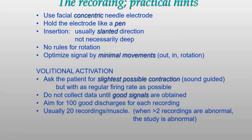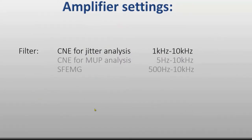Usually we record from 20 different positions in the muscle, which includes about two skin insertions. The amplifier filter setting is 1 kHz to 10 kHz — in single fiber EMG it was 500 Hz, but here we use 1 kHz as the lower limit.